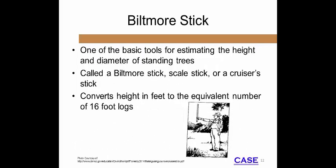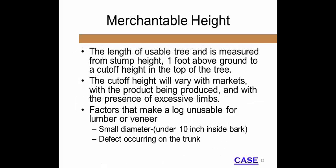The Biltmore stick requires the user to stand at a specified distance from the tree in order to triangulate the estimated merchantable height in increments of 16 feet. Different from total height, merchantable implies the ability to cut lumber, veneer, or other products from the logs contained in a tree. Factors that make a log unusable include too small a diameter (under 10 inches inside the bark), defects, or insect damage. Merchantable height is controlled by a diameter limit in the upper part of the tree or by defects such as a fork in the trunk or smaller limbs, which render the wood above unsuitable.